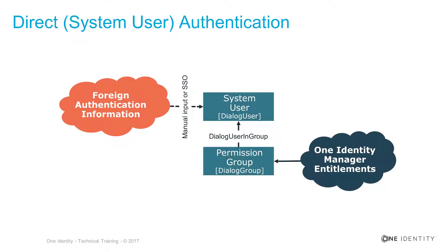The easiest way to get identified in Identity Manager is to use the system user. A system user is a OneIdentity Manager account. The OneIdentity Manager account itself is a member of some permission groups. The permission groups get all the permissions assigned that exist in Identity Manager and that you need for your specific permission situation.